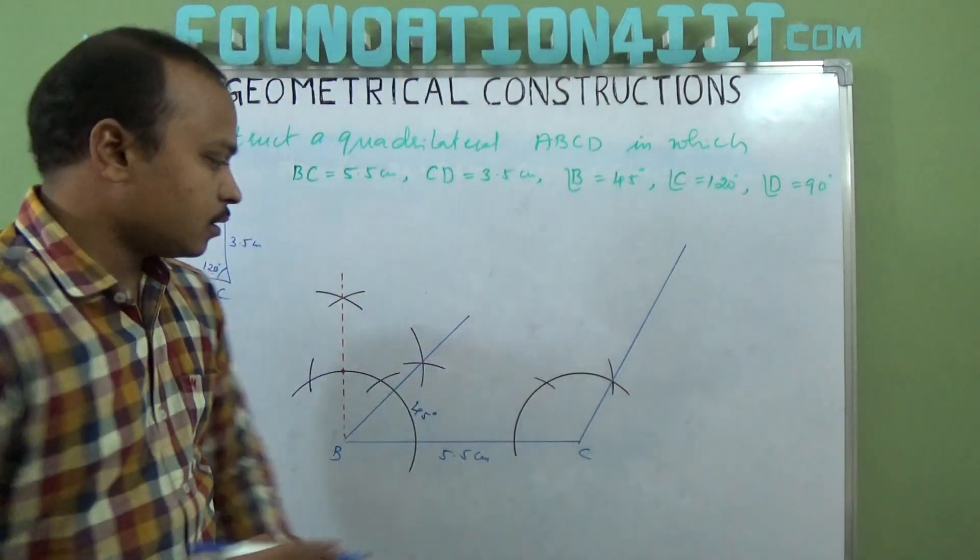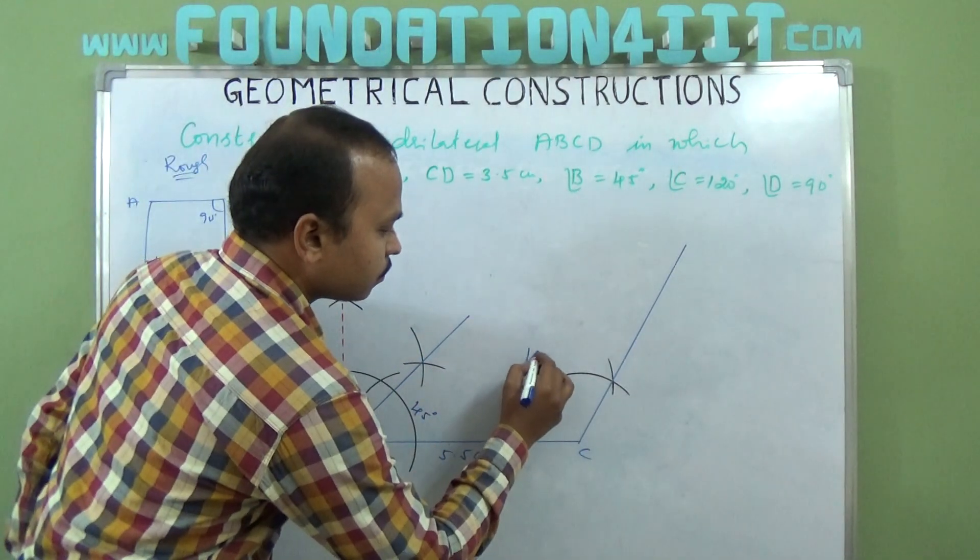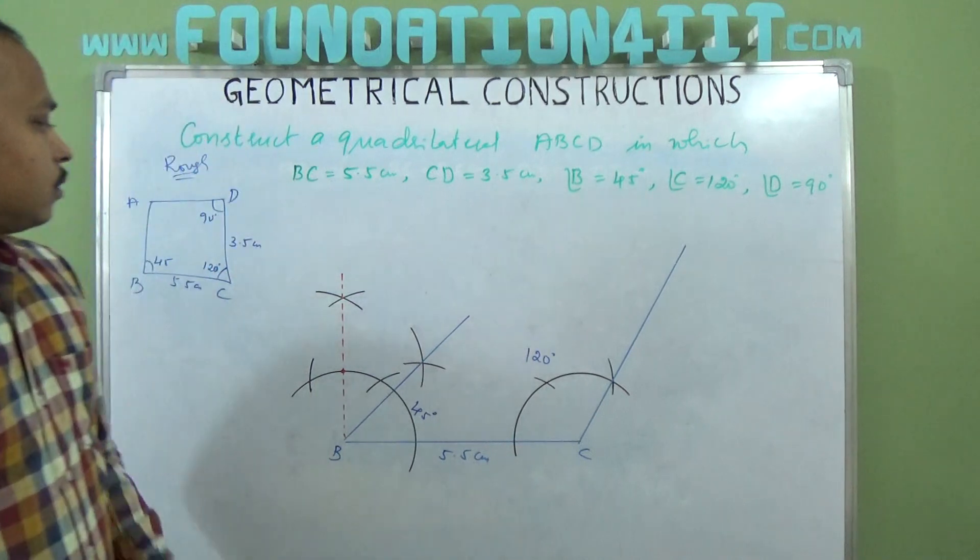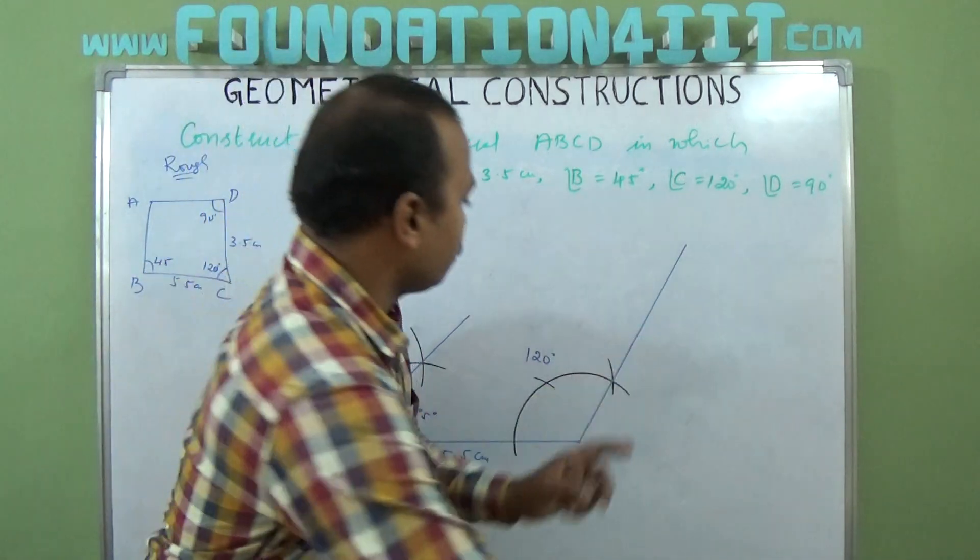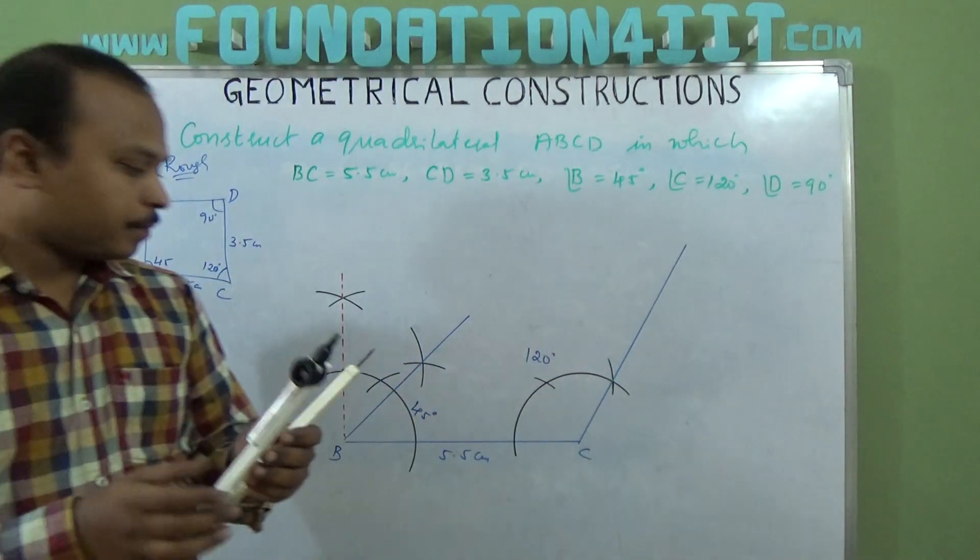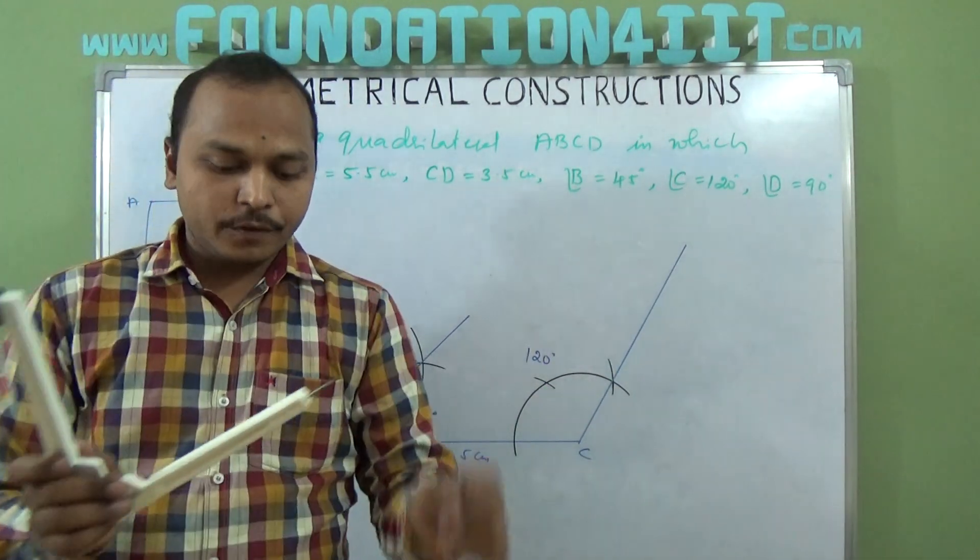So angle C to D, C to D, C to D, somewhere D is there. But C to D distance is 3.5, so I should take 3.5 centimeters.